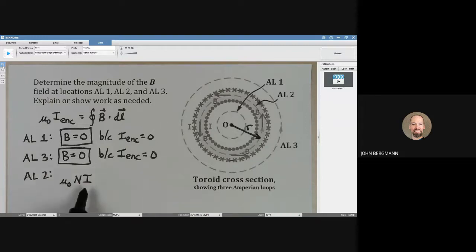Each coil has a current I and there are n of them that are coming out of the page at us on the inside of that loop and that needs to be numerically equal to the magnitude of the magnetic field dot that dot product with the DL.